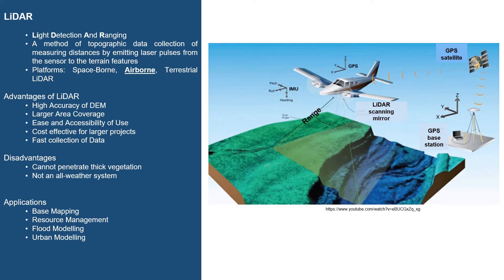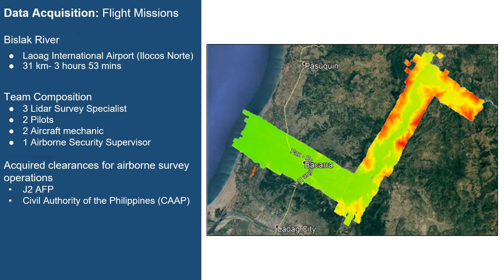Focusing on our project, the overall LiDAR survey consists of three phases: data acquisition, data validation, and data processing. The flight mission for data acquisition in the Bislak River took about four hours to complete the survey across the 31-kilometer river stretch. This was done in February, where we expect to have the lowest flow along the river. Flight plans were predetermined, and weather was one of the top priorities before proceeding with the survey.